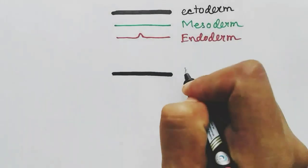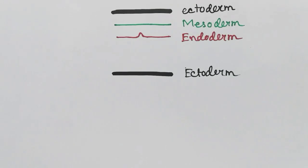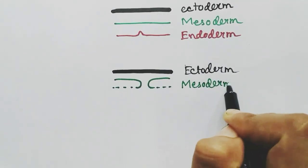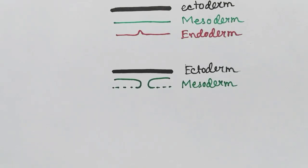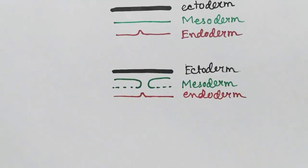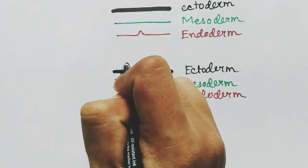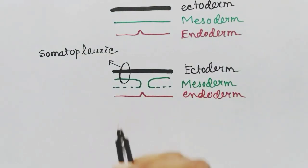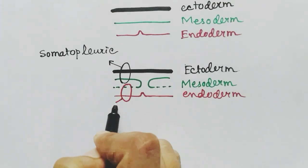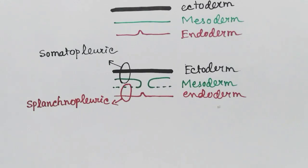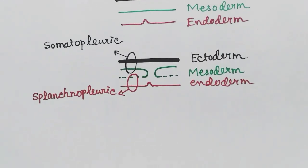The mesoderm layer will divide into two layers. One layer of the mesoderm will be associated with the ectoderm, and one will be associated with the endoderm. The part of mesoderm associated with the ectoderm is called somatopleuric mesoderm, and the part associated with the endoderm is called splanchnopleuric mesoderm.